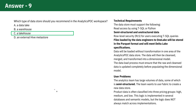Looking at the other options: Option A — data lake — could be valid, but it is not really a concept that exists in Fabric. Option B — a warehouse — is not valid because it supports only structured data. Option D — an external hive metastore — doesn't make sense, as it is a centralized repository that stores metadata related to tables, partitions, columns, schemas, and other data structures used by Hive and Spark.